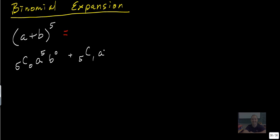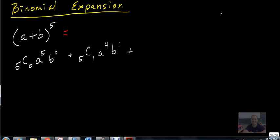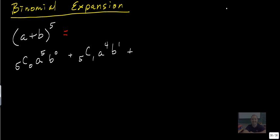So 5 choose 1 now, a to the 4, b to the 1. So remember, this keeps coming down, this keeps going up. I'm just going to give you guys a second to, I want you to write out the rest of the terms. I'm going to kind of freeze the video here and write out the rest of the terms, and I'll reveal it in a second so you can check.